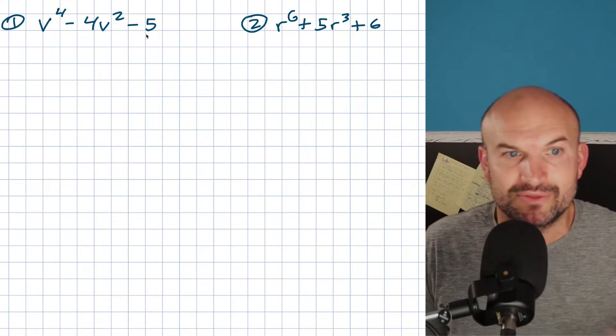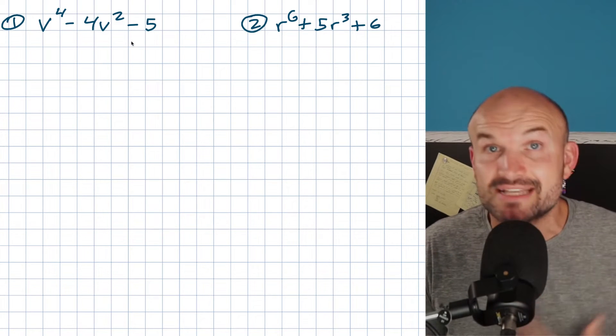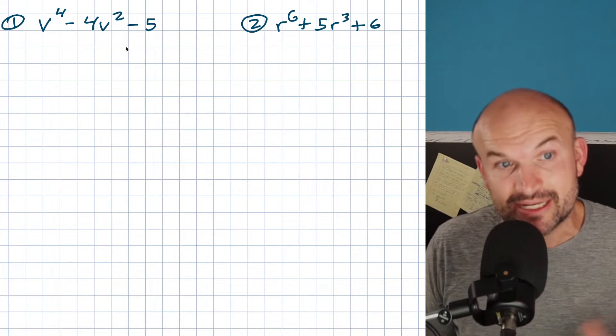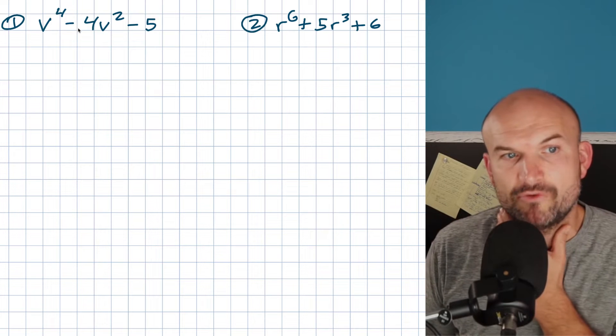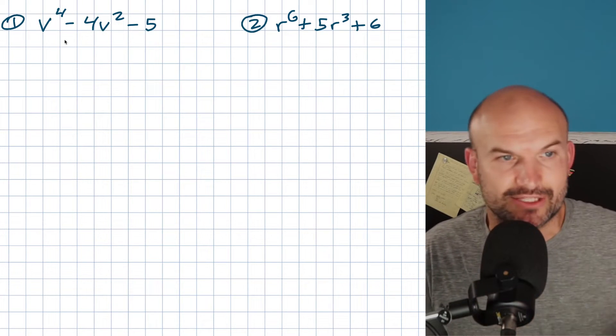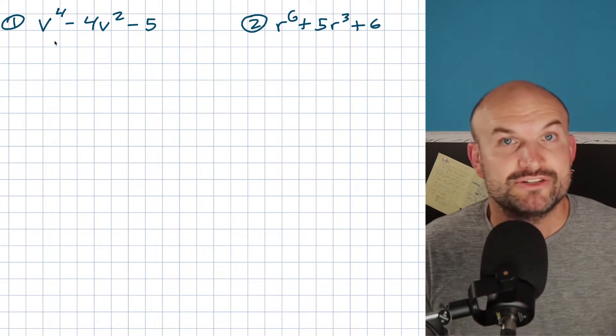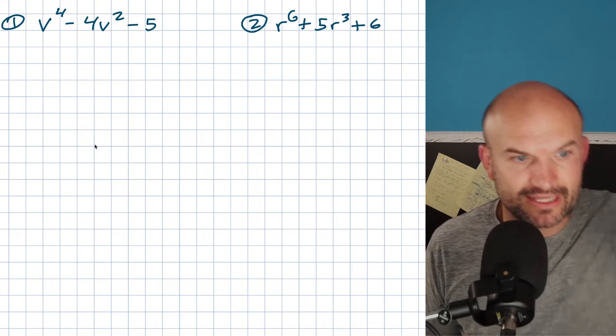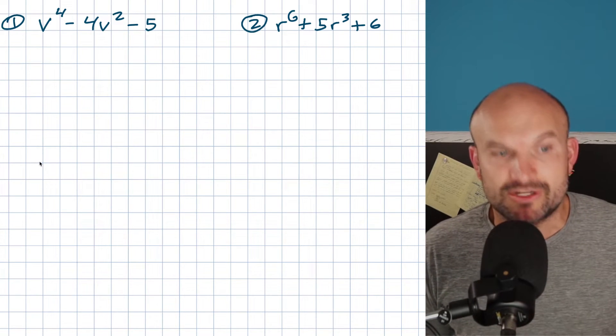Because they are solvable, you can factor these, and they're not as difficult as they seem initially. So what we have here is v to the fourth minus 4v squared minus 5. Now let's pretend you're only familiar with quadratics. One thing I want to do is just focus on the quadratics for a second.